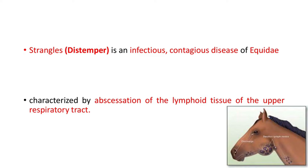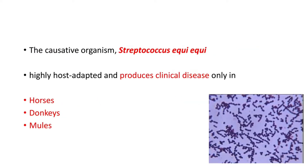This disease is characterized by abscessation of lymphoid tissue of the upper respiratory tract. The causative organism is Streptococcus equi equi. It is a highly host-adapted strain and produces clinical disease only in horses, donkeys, and mules.